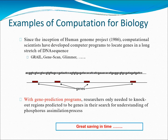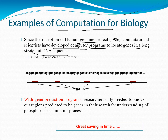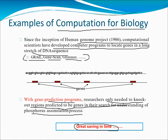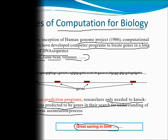Since the inception of the Human Genome Project in 1986, computational scientists have developed several programs to isolate genes in a long stretch of DNA sequence. Some of them are GRAIL, GenScan, and Glimmer — remember one or two of these names. With gene prediction programs, researchers only needed to knock out regions predicted to be genes in their search, resulting in a great saving of time. I'll be making another video for more on this topic, so stay tuned and thank you for watching.